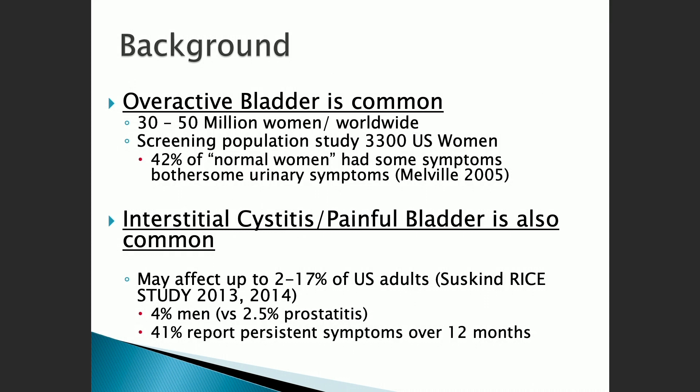I want to talk about these two conditions because they are highly prevalent. This is something that most urologists see commonly in practice, hear about at dinner parties — it somewhat defines us as urologists. How do we manage these conditions? We are the content experts. Overactive bladder is very common, probably between 30 and 50 million women worldwide. An epidemiologic questionnaire study in 2005 of 3,300 women found that 42 percent had symptoms consistent with overactive bladder.